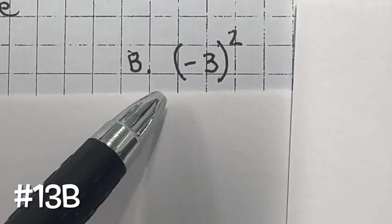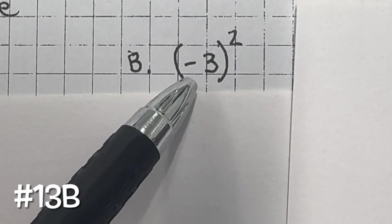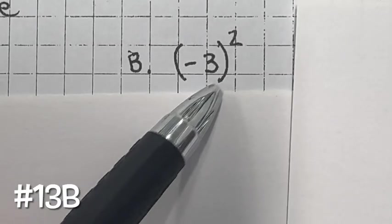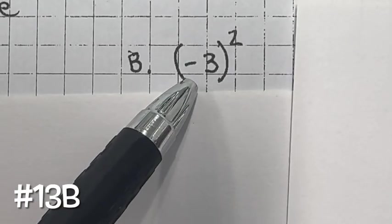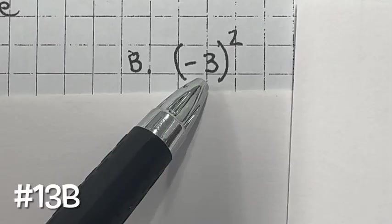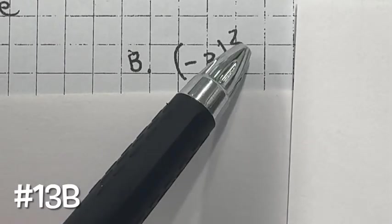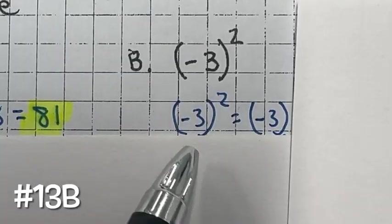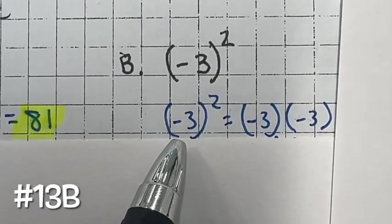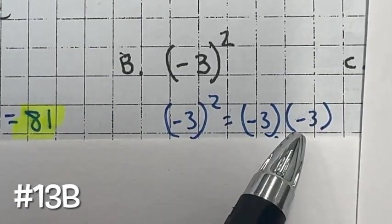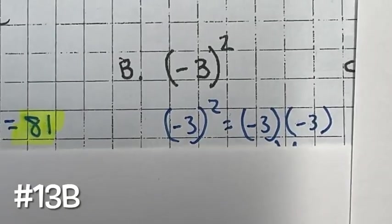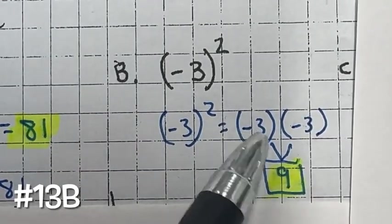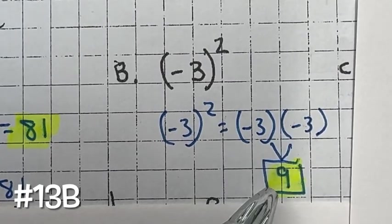For 13b, we have the quantity of negative three squared. Since this is in parentheses, the base is negative three, and that's what's being multiplied two times. So negative three multiplied by negative three equals positive nine. Remember, a negative multiplied by a negative is going to be a positive.